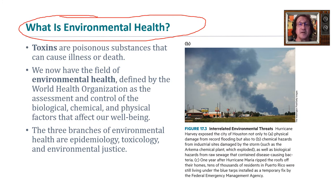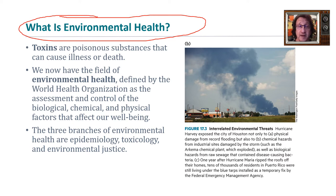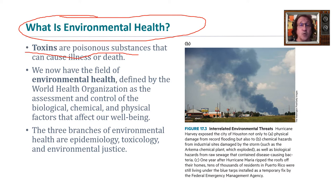Environmental health is essentially how our personal and community health is affected by the environment — both the natural environment, like trees producing pollen causing illness, and the anthropogenic factors such as industrial pollution and city planning that places people in polluted areas. The most common way the environment harms us is through pollution and the introduction of toxins, both natural and human-made.